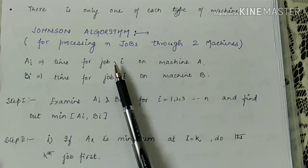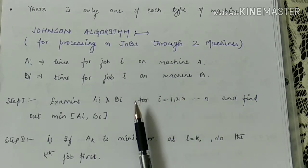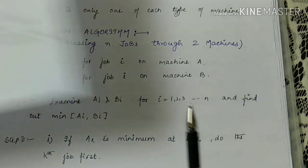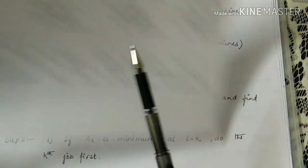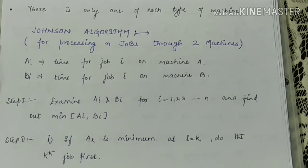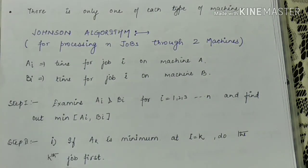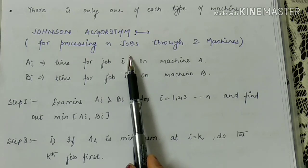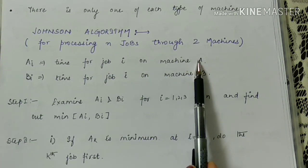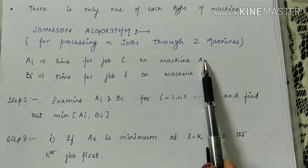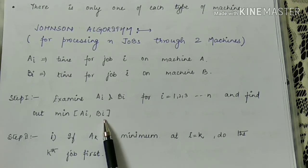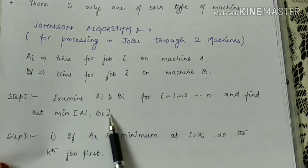Now, starting with the algorithm. For solving N jobs and two machines type of questions, we use a particular algorithm called Johnson's algorithm. In Johnson's algorithm there are a few steps. We have two machines, machine A and machine B, and i is the time period — the time for job i on machine A and the time for job i on machine B. I will explain this in parallel while solving a question.